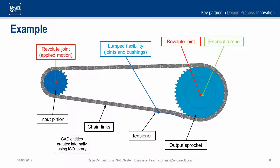In this slide you can see a very simple model I created using the Chain Toolkit. All elements have been generated internally using the easy library, so no external CAD data was needed. The model is composed of an input pinion and an output sprocket connected by a chain composed of more than 100 rigid bodies. Both sprockets are connected to the ground via revolute joints; a speed ramp is applied on the input pinion while a constant torque acts on the output sprocket. The model also contains a chain tensioner, composed of several rigid bodies connected by joints and bushing to represent the flexibility of the tensioner using a lumped scheme.